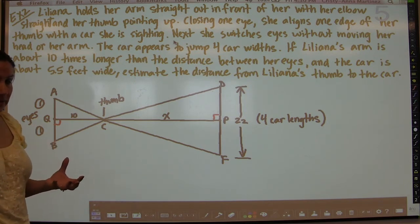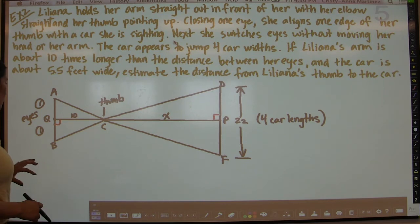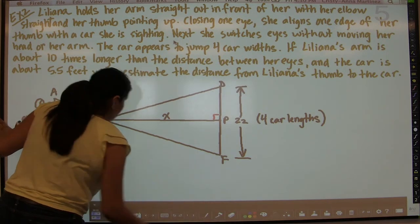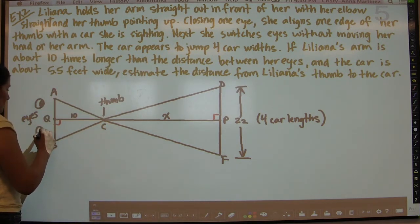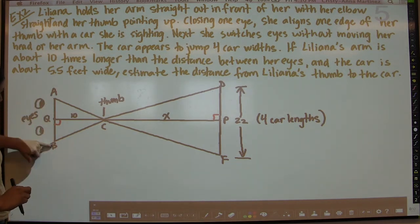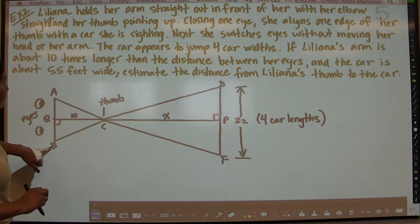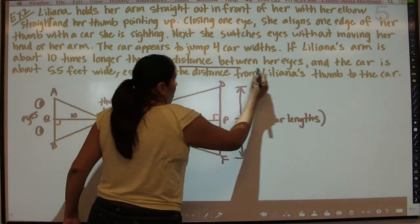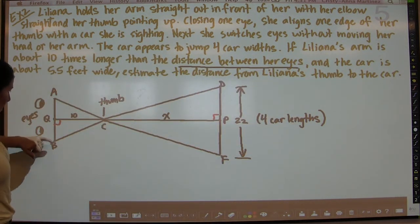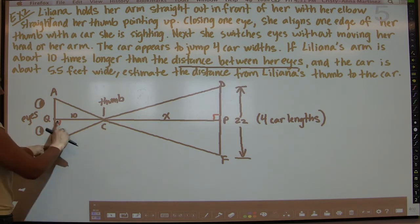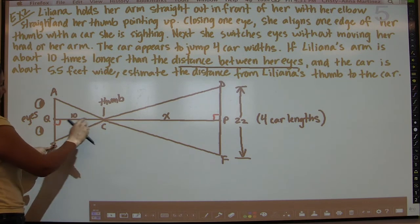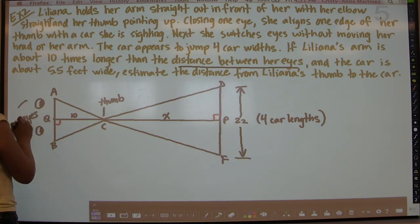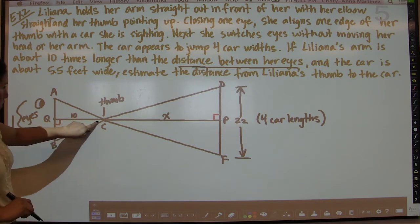I've created a diagram for this. Liliana is drawn here with her eyeballs indicated. Segment AB represents the distance between her eyes, and QC represents her arm length, which is ten times longer. So if QC equals 10, then AB equals 1.